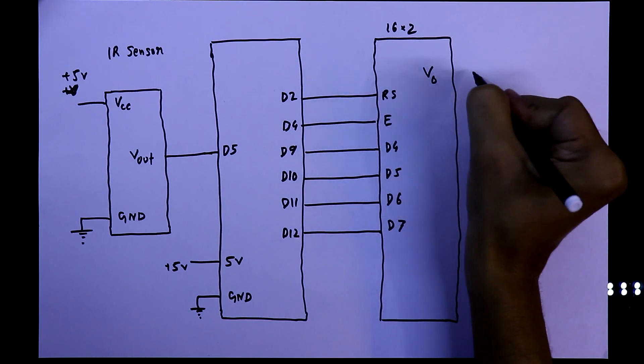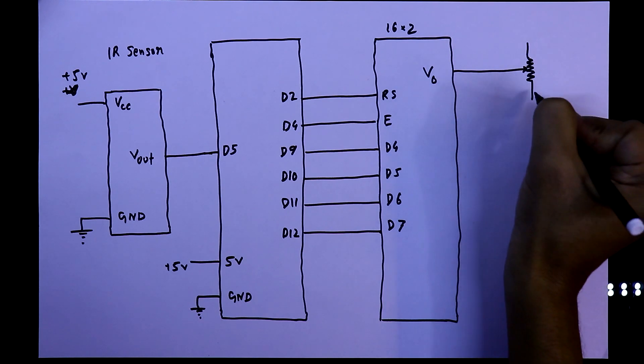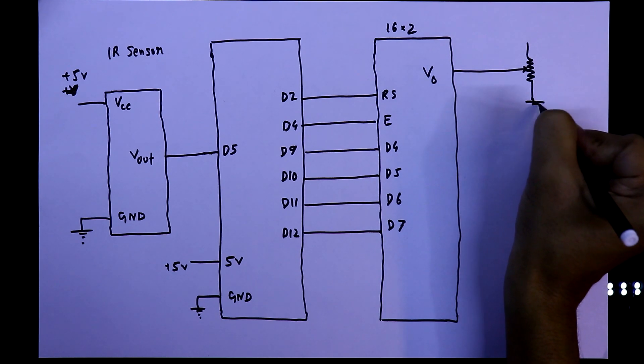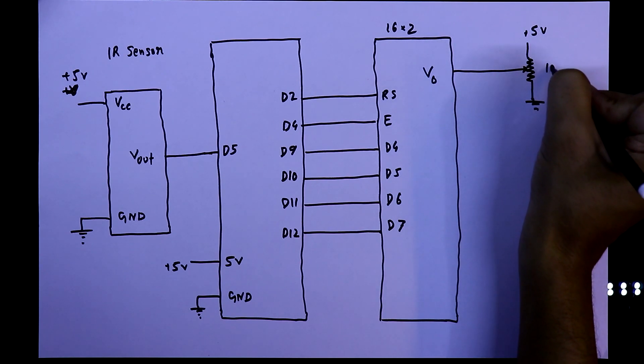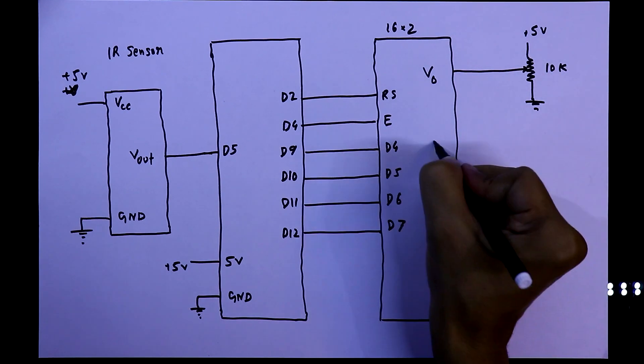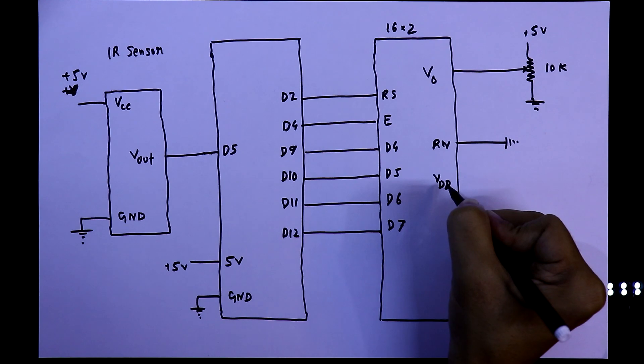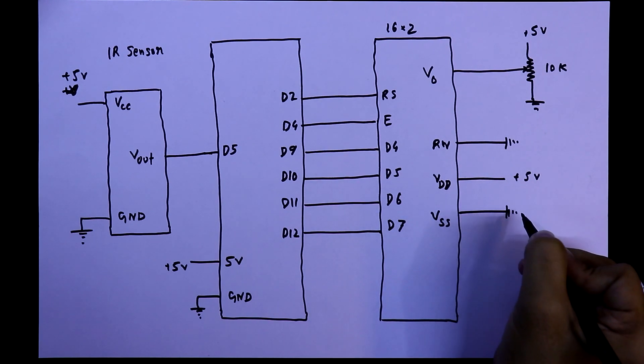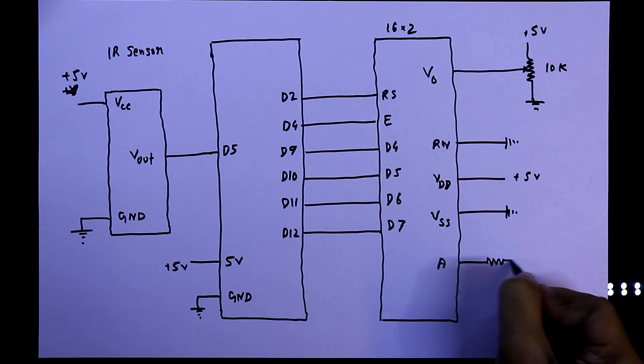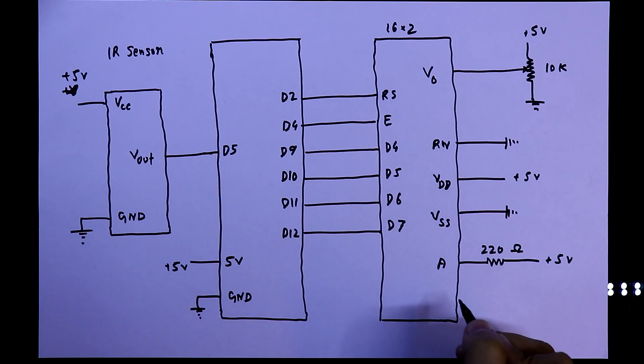V0 pin of the display is connected to the middle pin of a potentiometer. The other two pins are connected to ground and plus 5V. The value is 10kΩ. RW pin is connected to ground. VDD is connected to plus 5V. VSS is connected to ground. Anode pin of the LED is connected to a 220Ω resistor and it is connected to plus 5V, and the cathode pin is connected to ground.